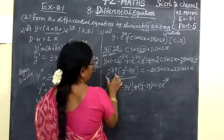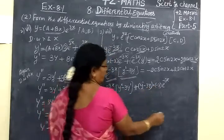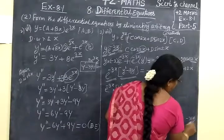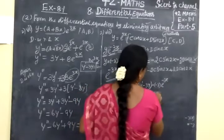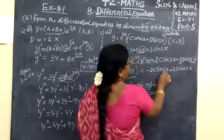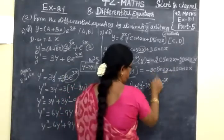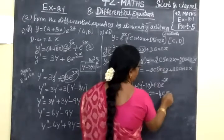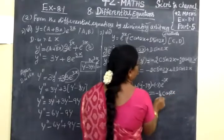We differentiate minus 3 into 1, so that minus 3 we write here. The inner function 2x differentiates to give 2. So minus 4C — sin's differentiation is minus sin — cos2x, inner function gives into 2. Beginning and end — then minus.